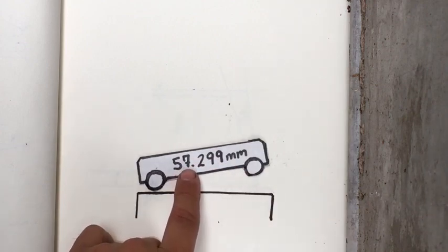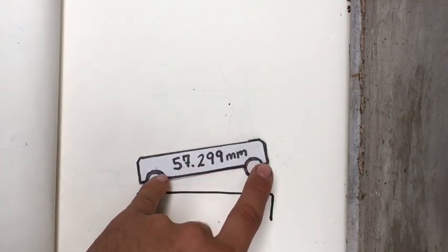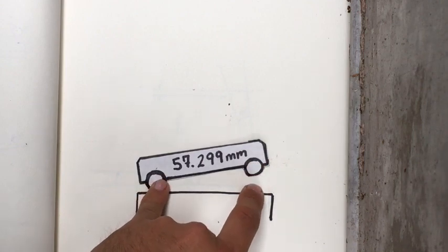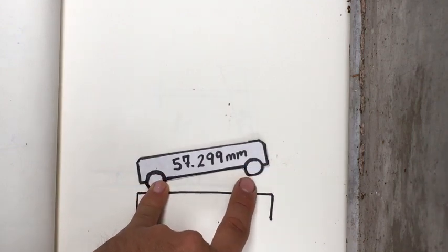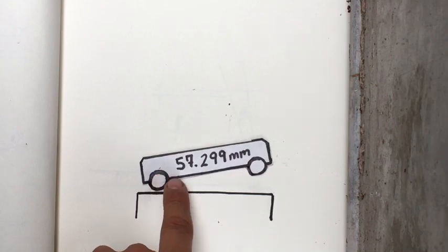Turns out that a 57.3 millimeter gauge block gives you a relationship of like one millimeter gives you one degree of angle.